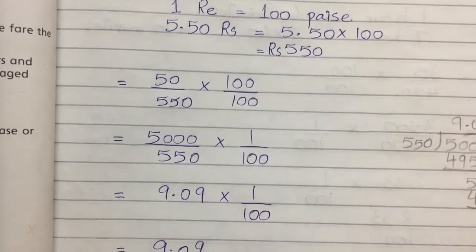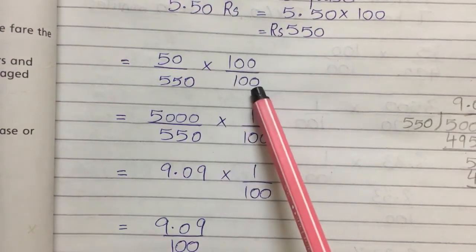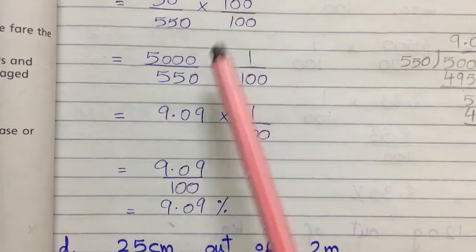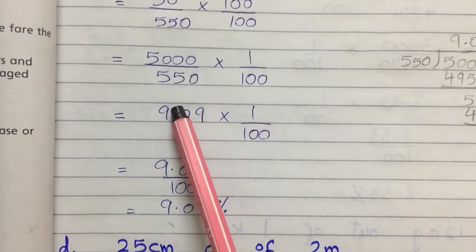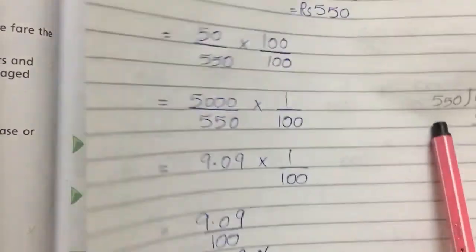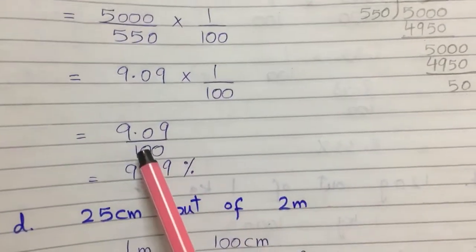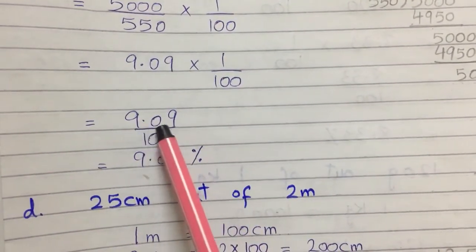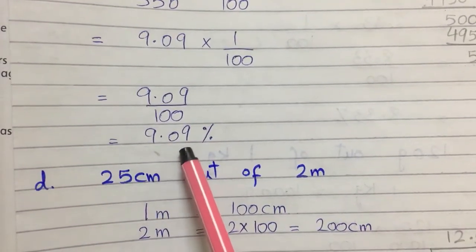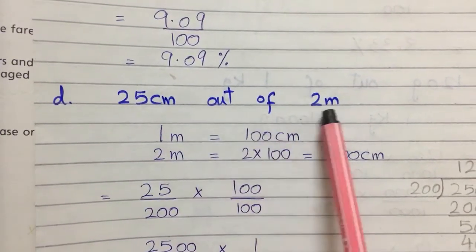Now write it as a fraction: 50 divided by 550, multiplied by 100 percent. Multiply: 50 multiplied by 100 equals 5000, divided by 550, multiplied by 1 by 100. Simplifying gives 9.09 multiplied by 1 by 100, which is 9.09 divided by 100, equal to 9.09 percent.